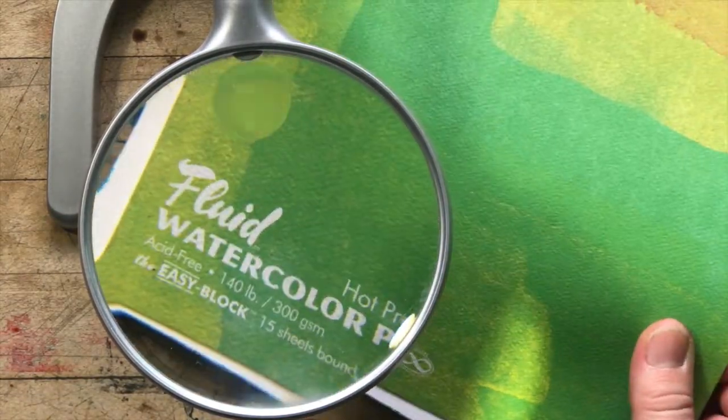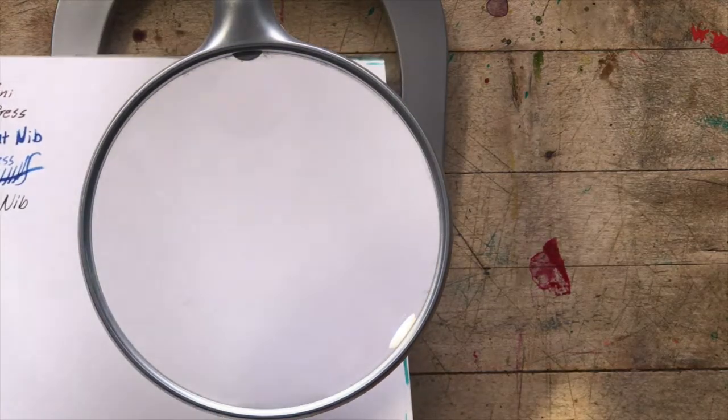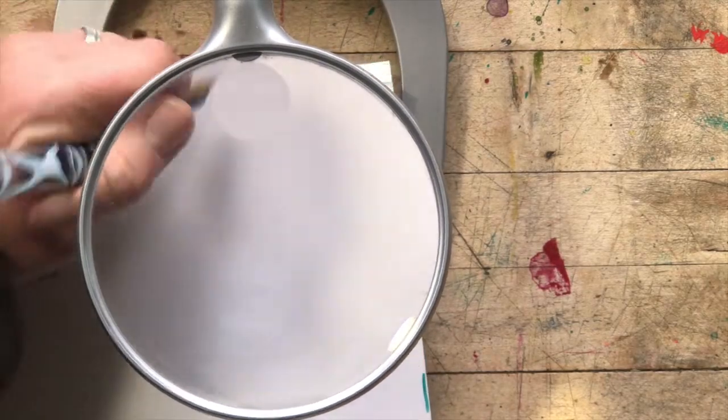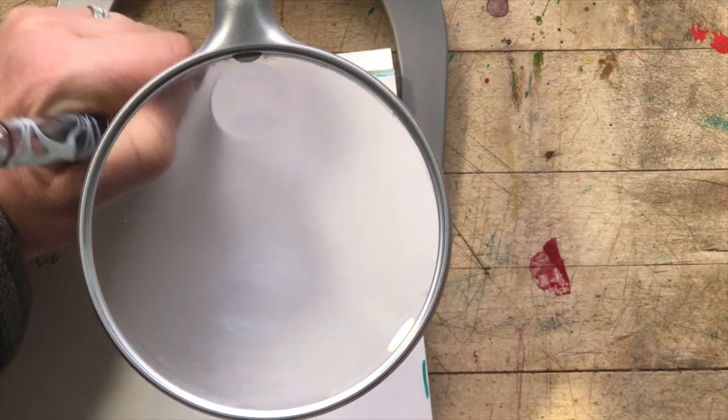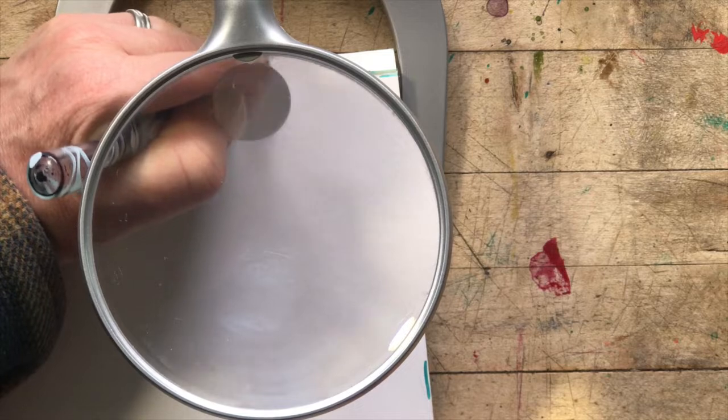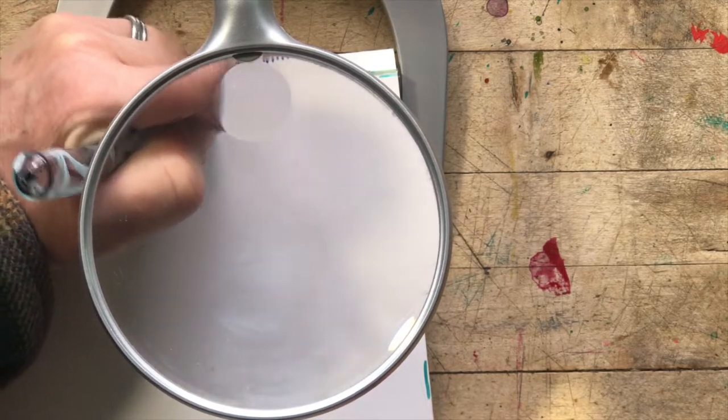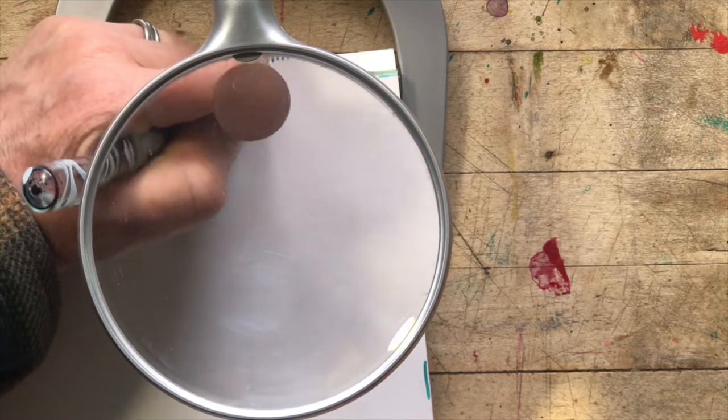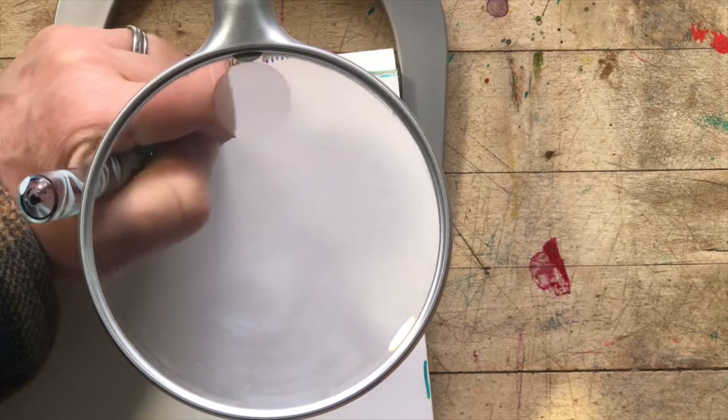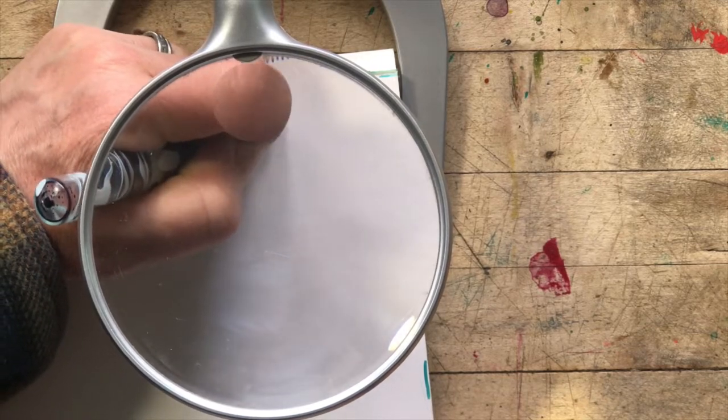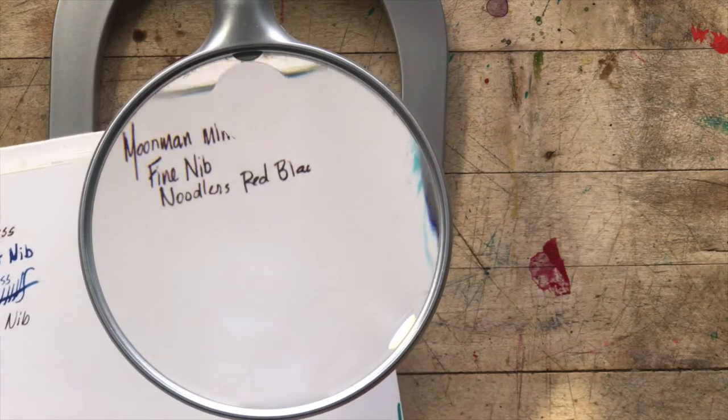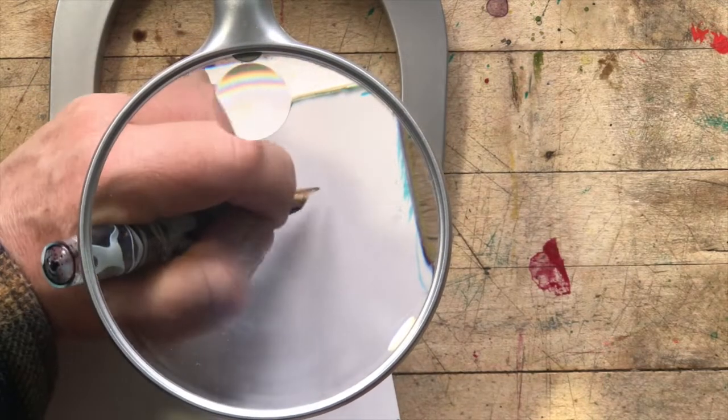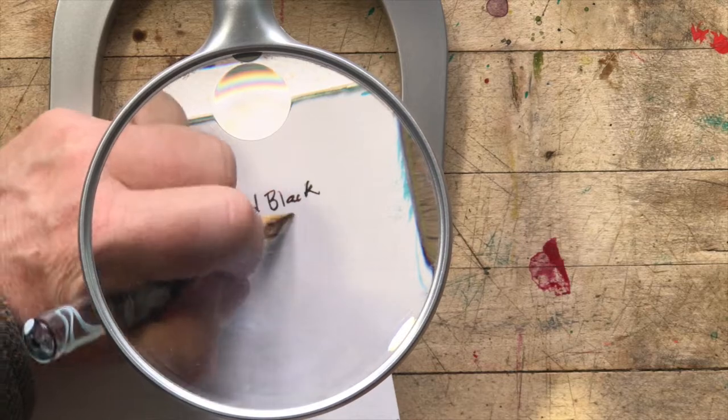Now this is the hot press and the biggest difference between hot press and cold press is smoothness. This is a very smooth paper. I would say it's roughly equivalent to the texture of maybe an index card. When I go to write on it, I'm just getting a clearer sharper line with it.